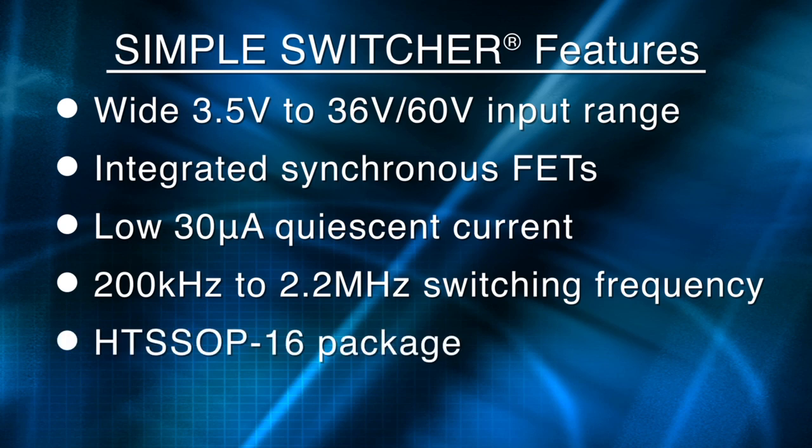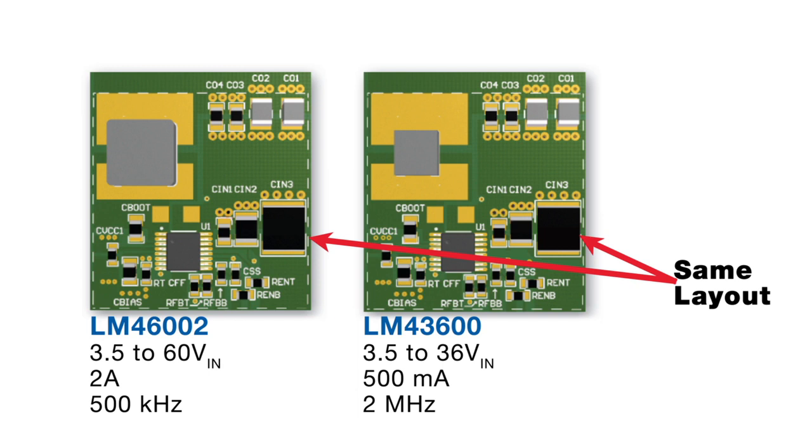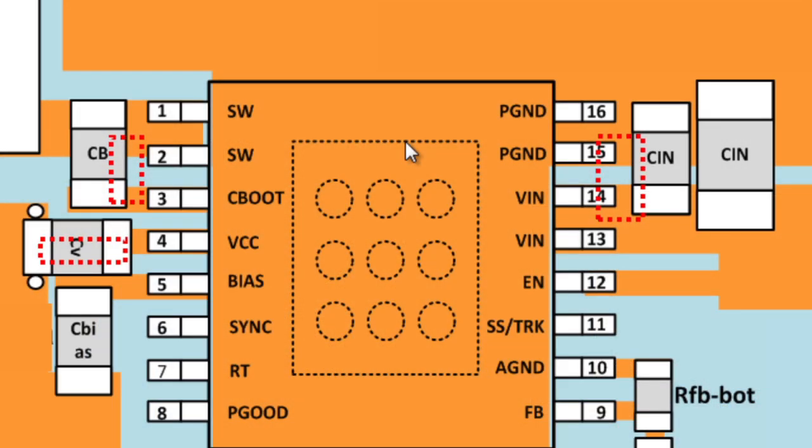The same HTSSOP16 package is used for the entire new generation of Simple Switcher products, offering footprint and pin compatibility across the whole family of 60-volt and 36-volt regulators, giving you one layout that can easily be leveraged for different voltage and current requirements. In addition, that HTSSOP16 has an innovative pin configuration that simplifies external component placement and routing, allowing you to minimize radiated and conducted noise, while also optimizing your PCB layout for excellent thermal performance.